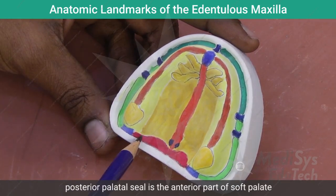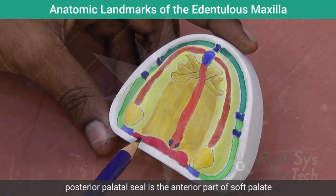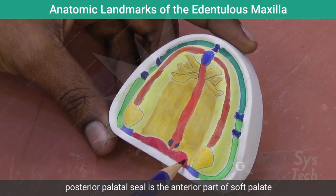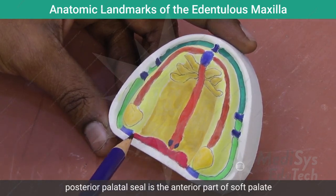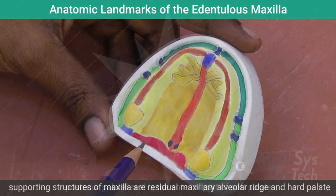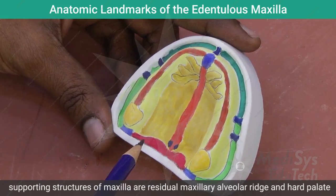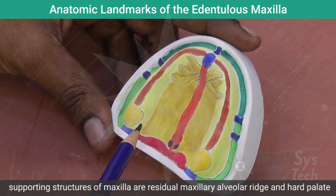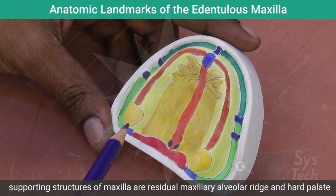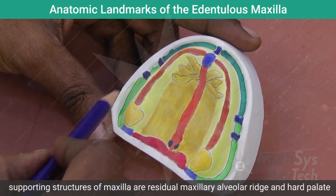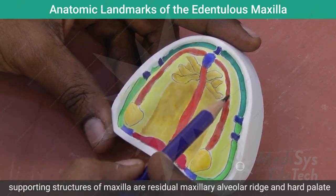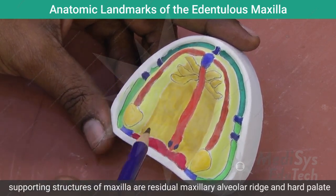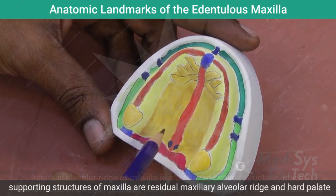The posterior palatal seal area is the anterior part of the soft palate. The supporting structures of the maxilla include the residual maxillary ridge and the hard palate.